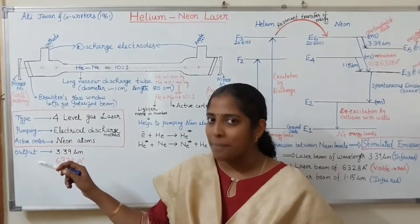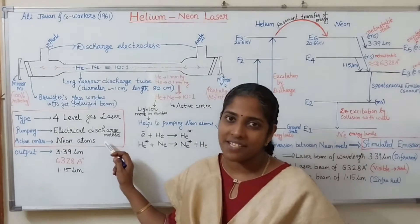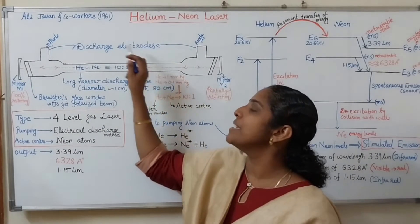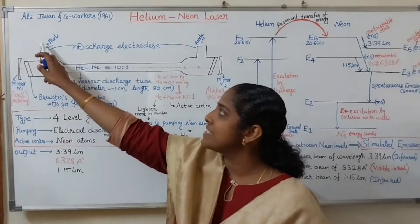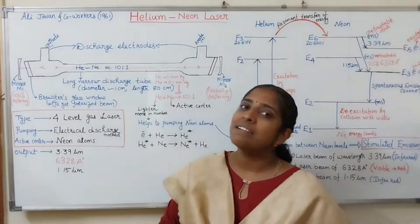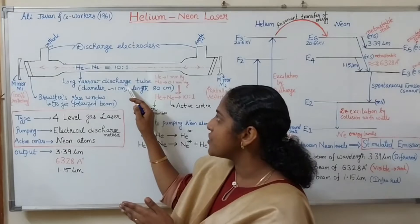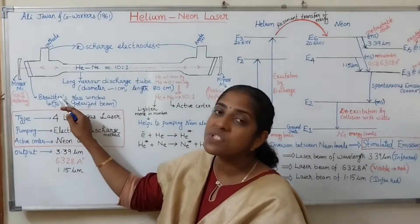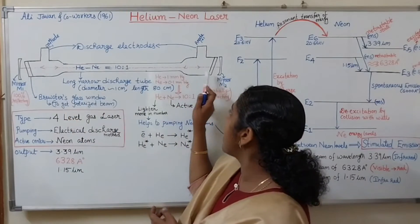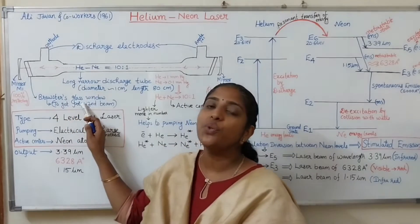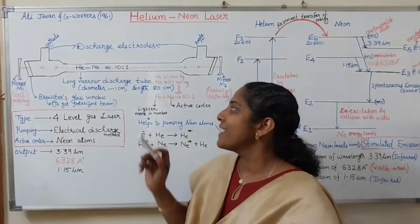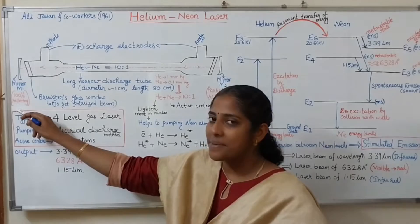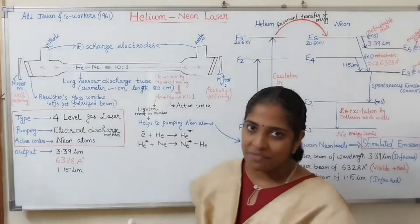To achieve the population inversion, pumping is required; here we are using electrical discharge method. So the ends of this long narrow discharge tube are connected to the electrode system — you can see cathode and anode, which are the discharge electrodes. This narrow discharge tube is sealed at the end by a glass window known as Brewster's glass window.